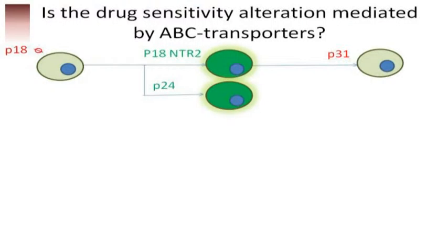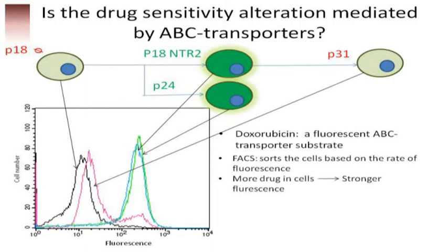They provided us with four human uterine sarcoma cell lines: P18, which is a resistant cell line; P18 NTR2, a sensitive cell line made by treatment with a collateral-sensitivity-causing drug; P24, also a sensitive cell line; and P31, made from NTR2 using another chemotherapeutic drug, which is resistant. First, we checked the phenotype of the cells. We used a fluorescent ABC transporter substrate and sorted the cells based on their fluorescence, finding much less fluorescent dye in the resistant cell lines than in the sensitive ones.